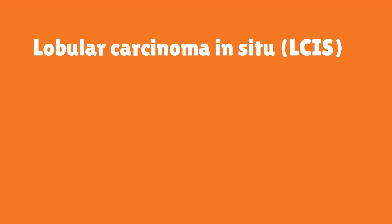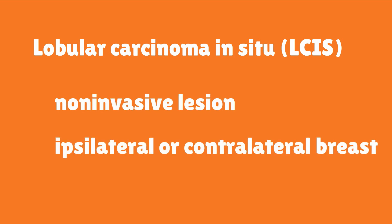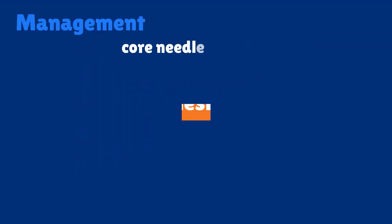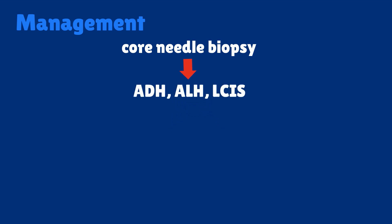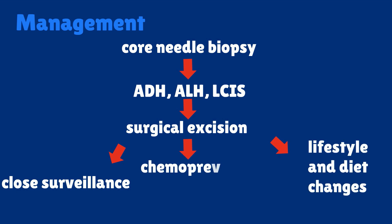Lobular carcinoma in situ is sometimes classified in the proliferative with atypia category. It is a non-invasive lesion that carries a risk of breast cancer in the ipsilateral or contralateral breast with a relative risk of 2. If the core needle biopsy demonstrates atypical ductal hyperplasia, atypical lobular hyperplasia, or lobular carcinoma in situ, then surgical excision is needed to avoid underestimation of the diagnosis. If the diagnoses are confirmed, the next steps will be close surveillance, lifestyle and diet changes, and chemoprevention is an option with a selective estrogen receptor modulator.